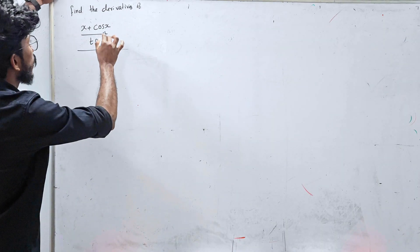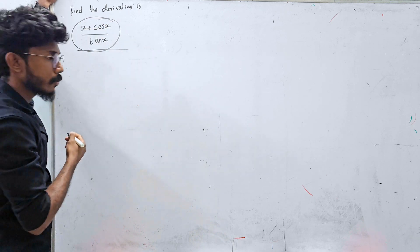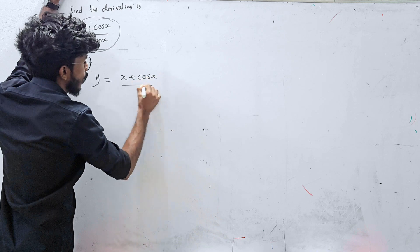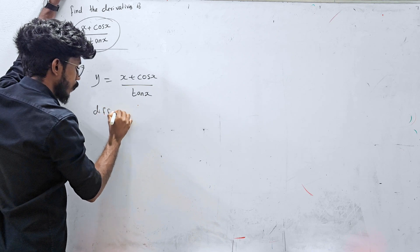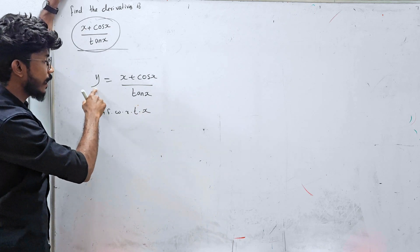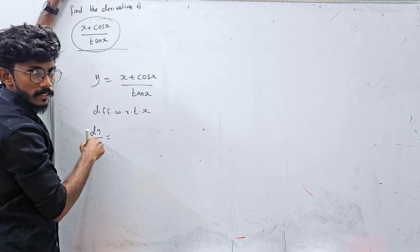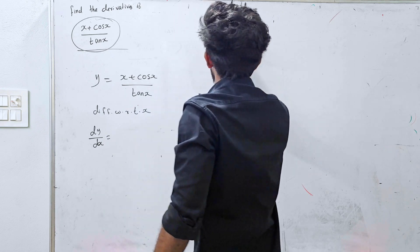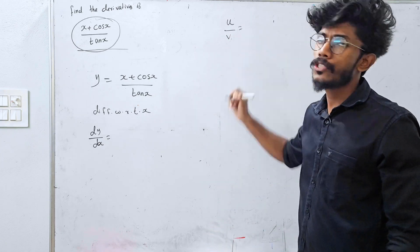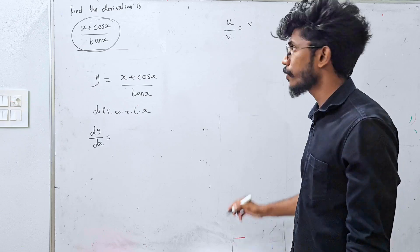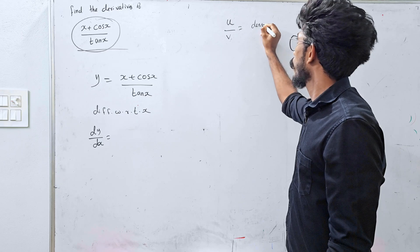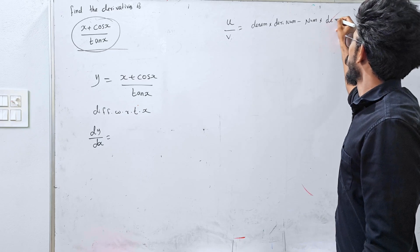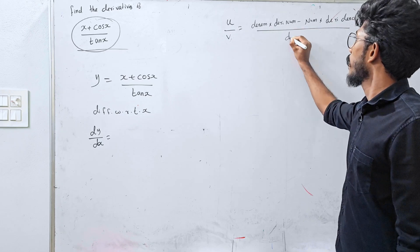Let's go to the next question. Find the derivative of (x + cos x) / tan x. If you ask the derivative of (x + cos x)/tan x, it's not first principle — we differentiate with respect to x using the quotient rule. Denominator into derivative of numerator.